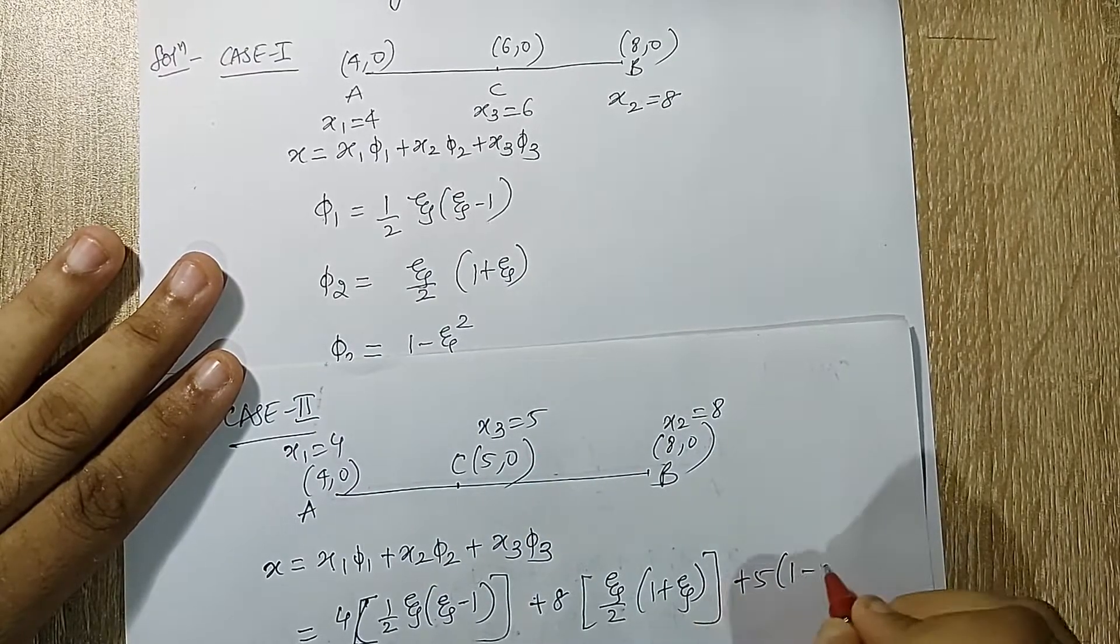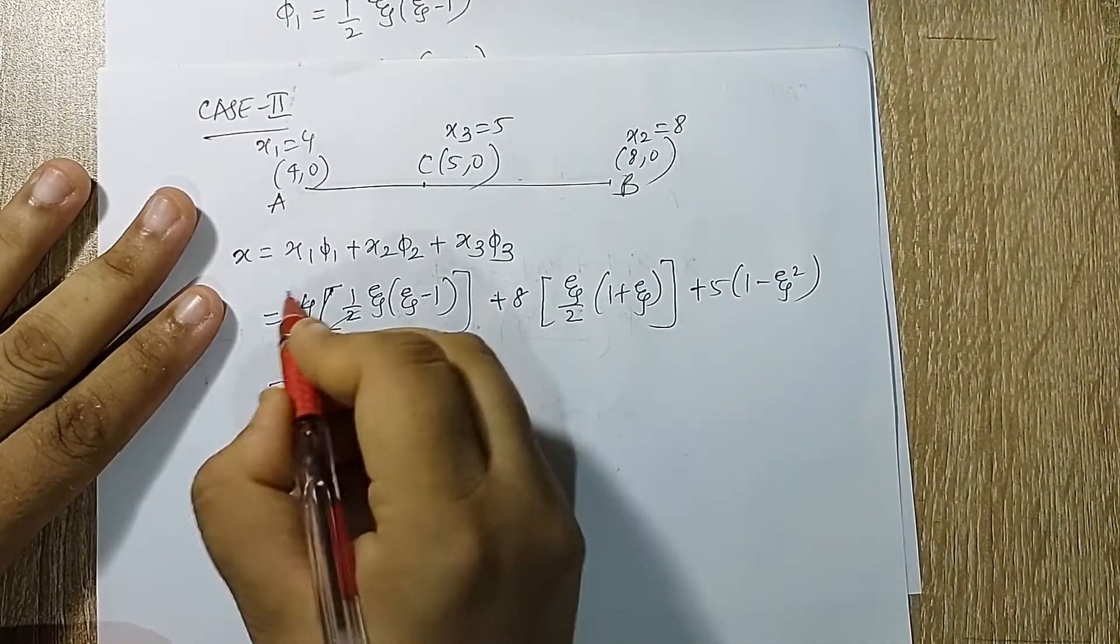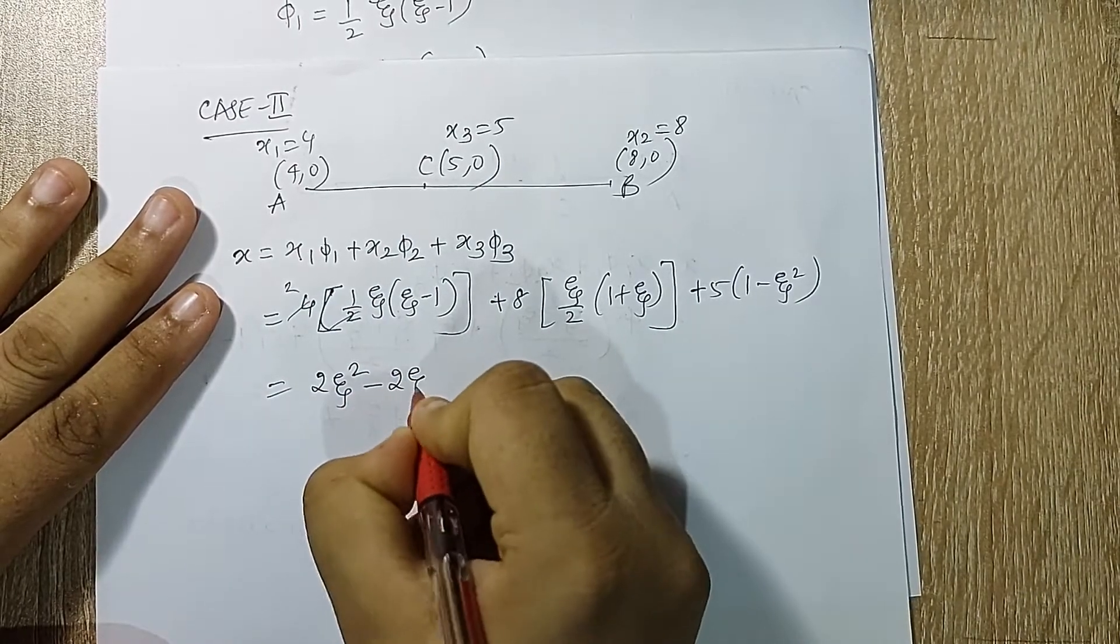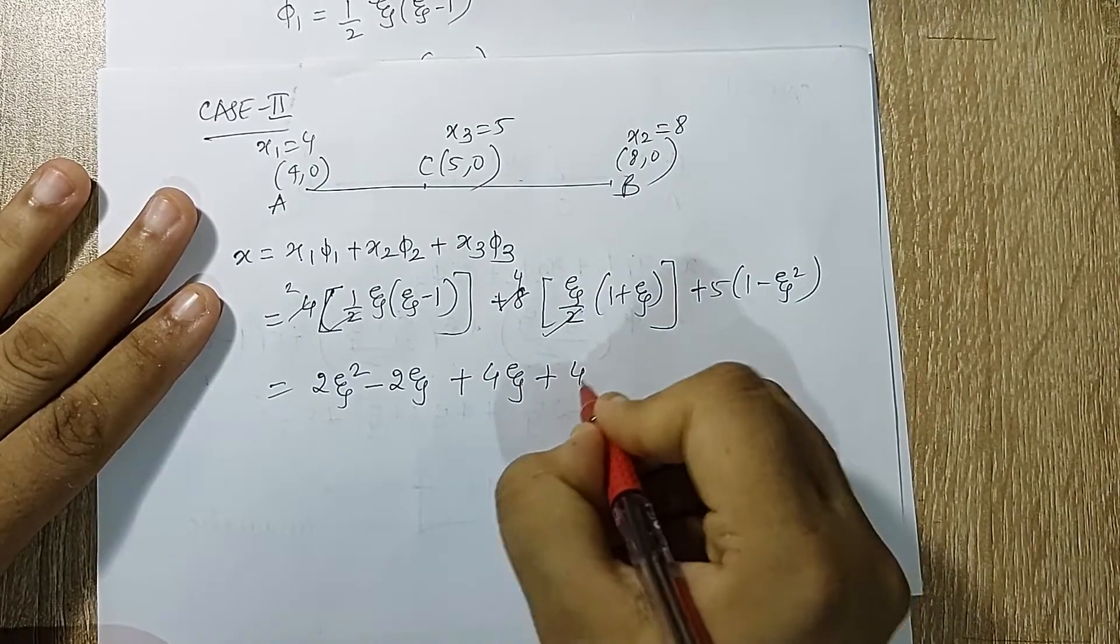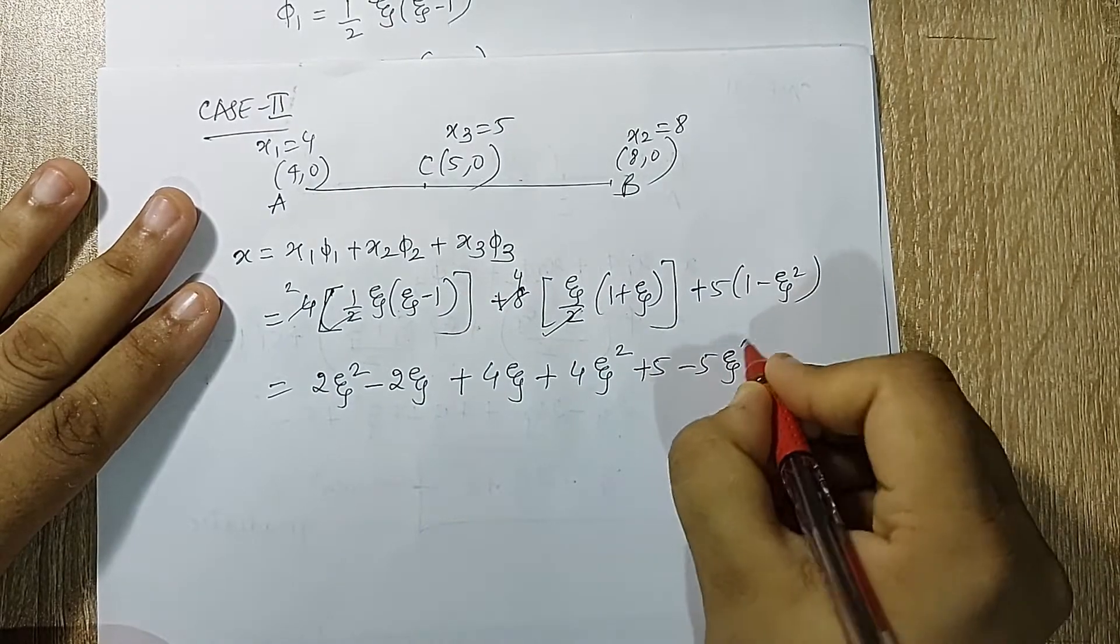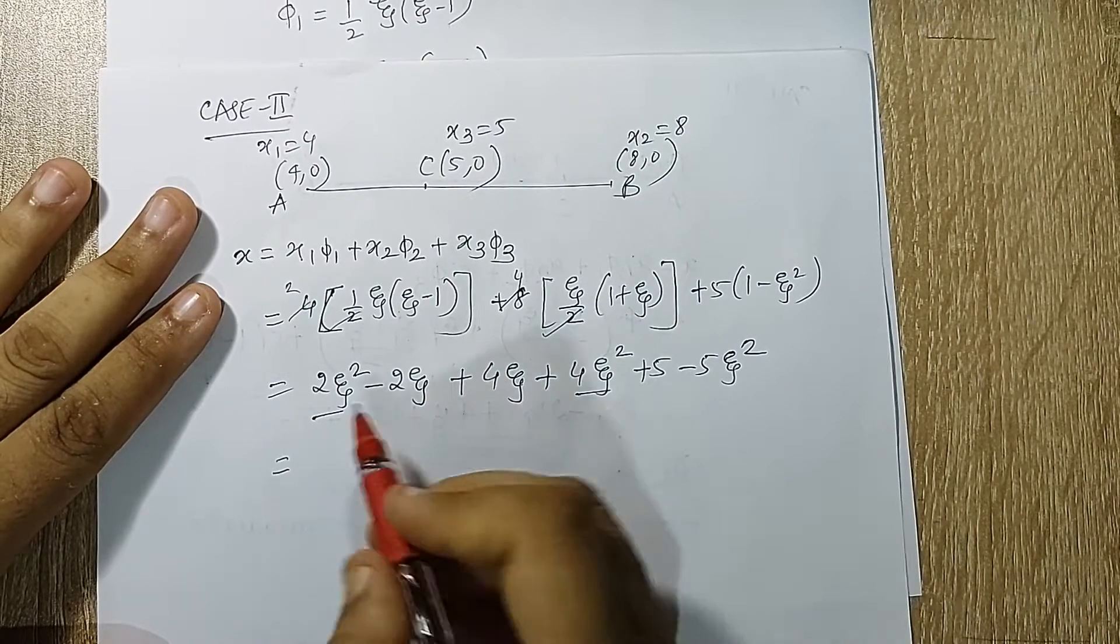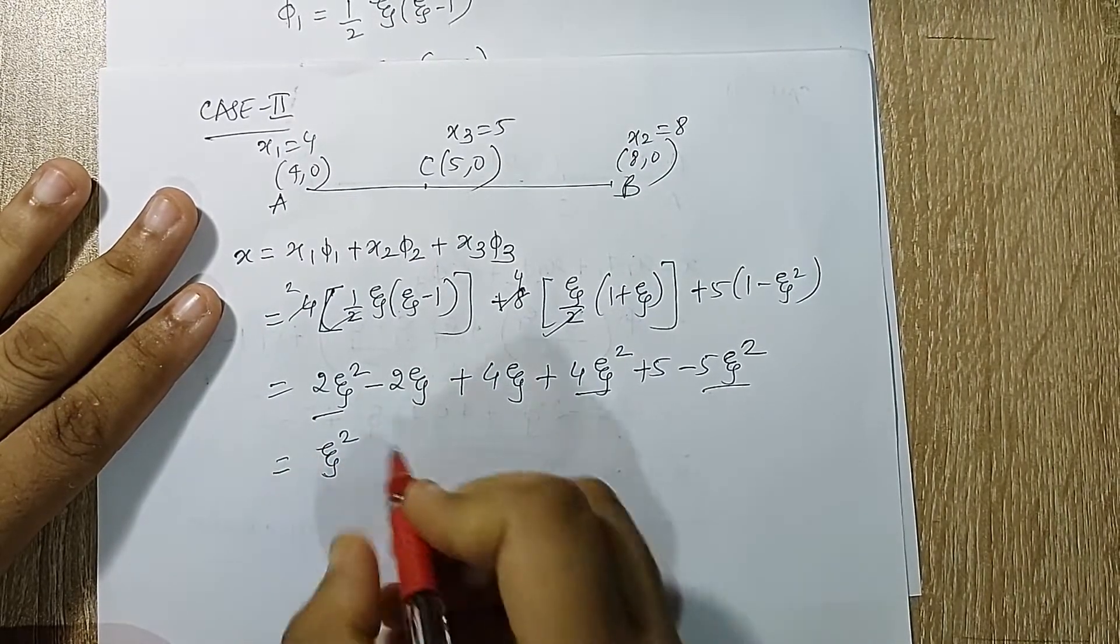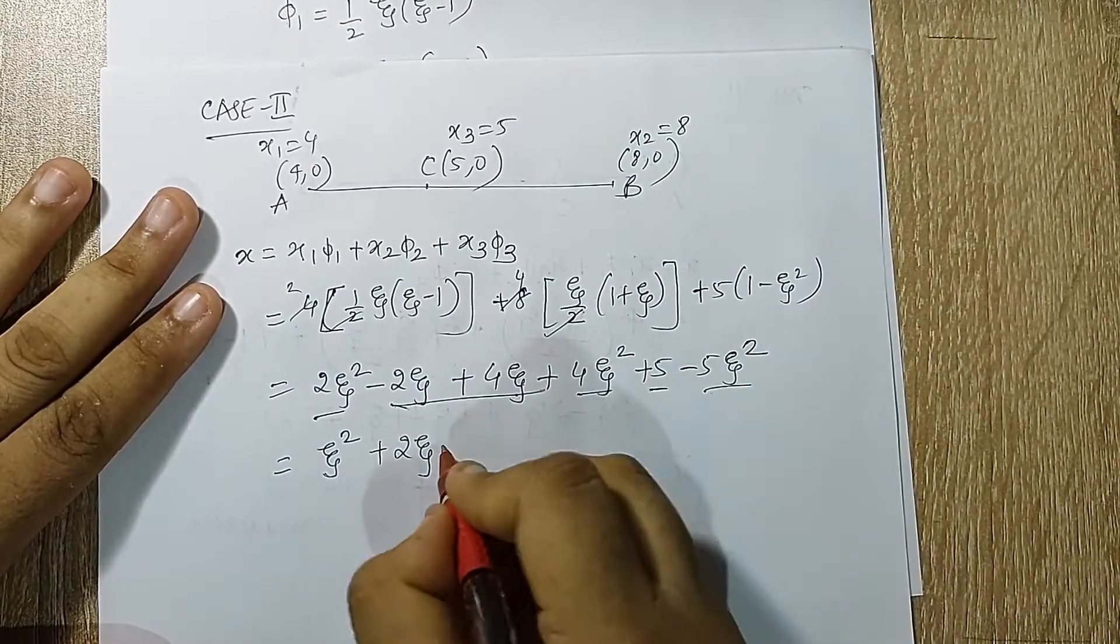Now let's open the bracket. This gets cancelled so I get 2*zeta squared - 2*zeta, plus this is again 4, so 4*zeta + 4*zeta squared, plus 5 - 5*zeta squared. Now here I have 4*zeta squared + 2*zeta squared making it 6*zeta squared, and minus 5, so this will be zeta squared. These two will add up to plus 2*zeta, and this term remains. So I have x as zeta squared + 2*zeta + 5.